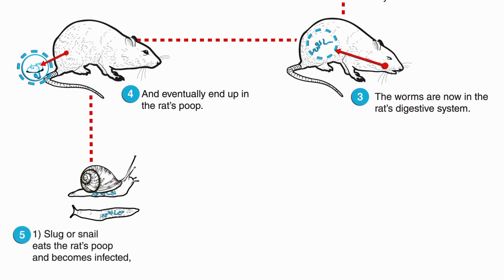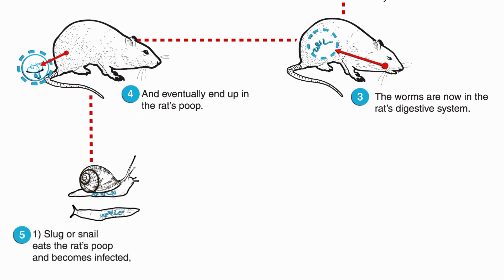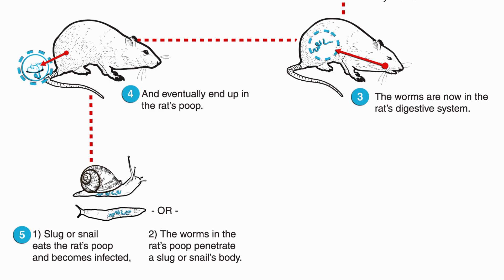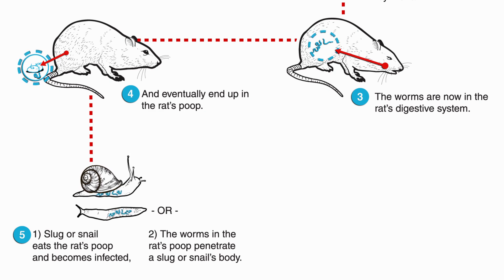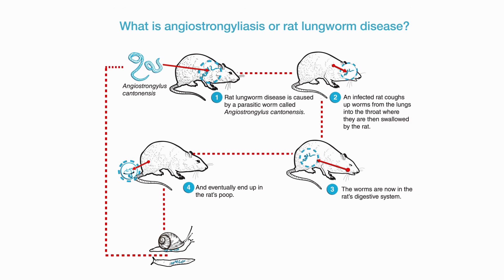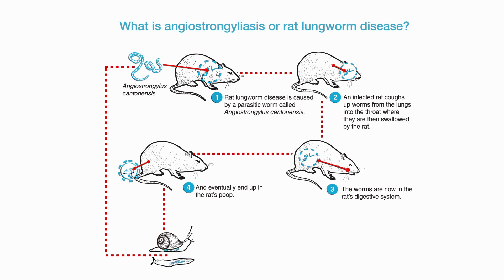Then, one: a slug or snail eats the rat's poop and becomes infected. Or, two: the worms in the rat's poop penetrate a slug or snail's body. When a rat eats an infected slug or snail, the cycle begins again.